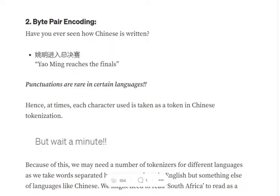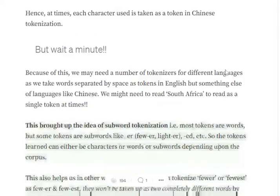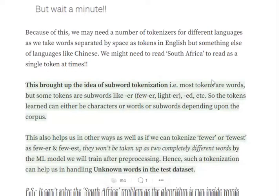Byte pair encoding is based on the idea of subword tokenization. Most words can consist of subwords or sub-tokens. For example, 'fewest' can be split into 'few' plus 'est', so there are two tokens present in the same word.